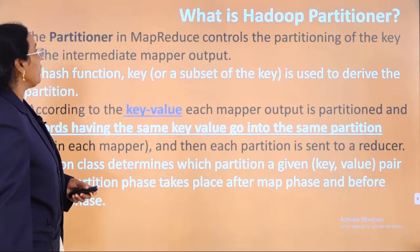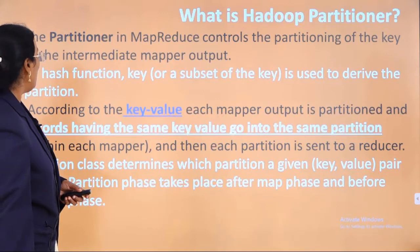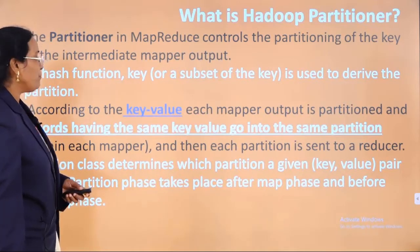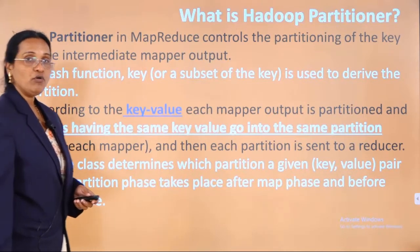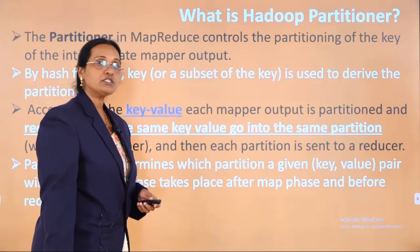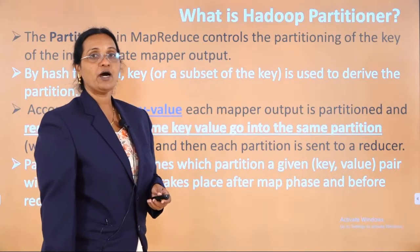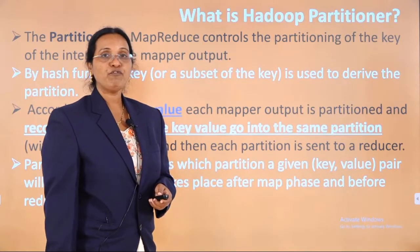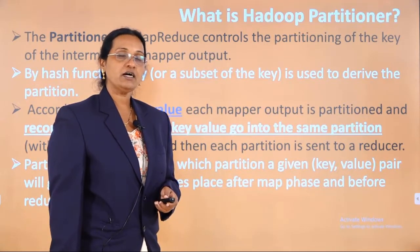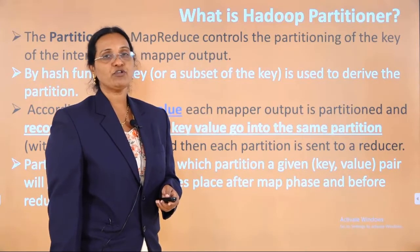Partitions in MapReduce control the partitioning of the key of the intermediate data, and the partitioning is done by the hash function. According to the key value, the partitioning is done, and once the partitions are done, that data is given to the reducer. In short, the partitioner comes before the reducer — the mapper job runs first, then partitioning occurs, and the output generated by the partitions is given to the reducer.